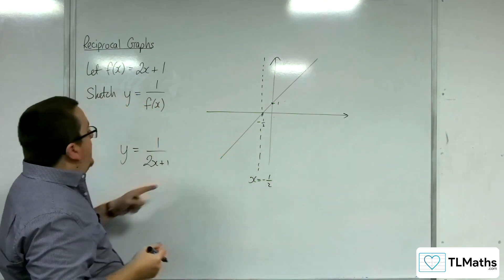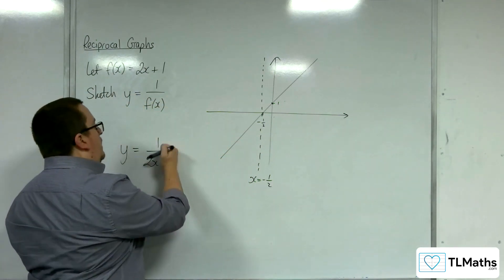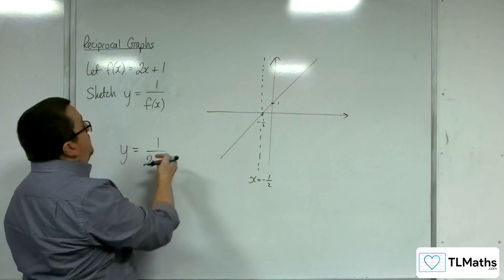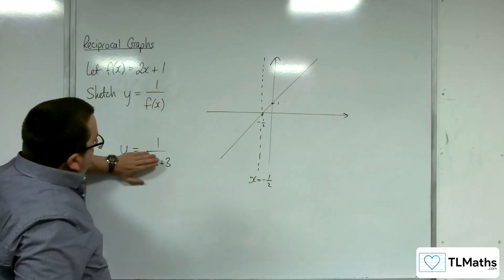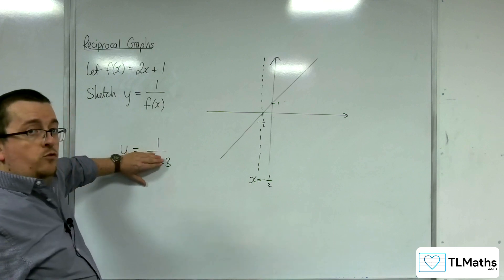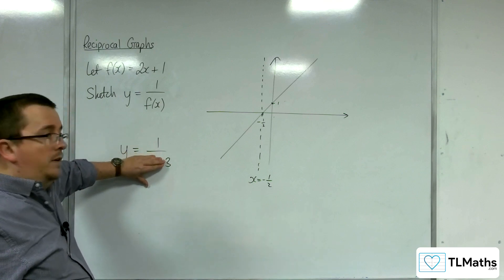Now, if I'd had y equals 1 over 2x plus 3, so my original function had been 2x plus 3, then I would now be crossing at y equals 1 over 3.